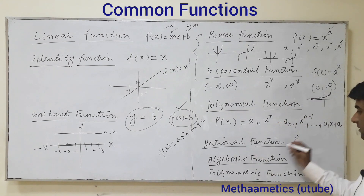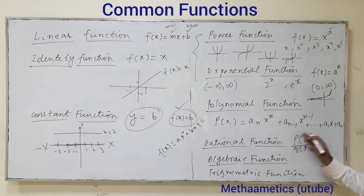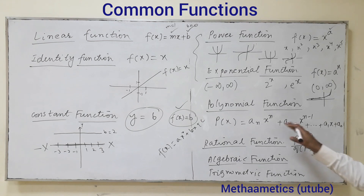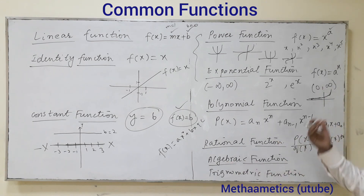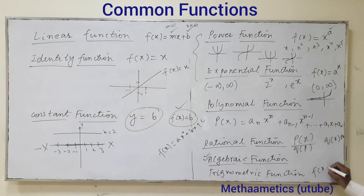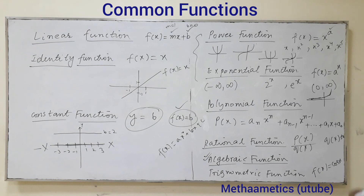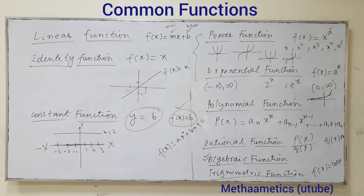Rational functions are algebraic functions written as a fraction p(x) over q(x), where both numerator and denominator are polynomials, with the condition that q(x) must not equal 0. Algebraic functions are functions formed from polynomials using addition, division, multiplication, subtraction, and so on. Trigonometric functions are functions in which trigonometric ratios such as cos x and sin x — along with their powers, sums, and products — are used, for example cos x, cos squared x, and cos x times sin x.